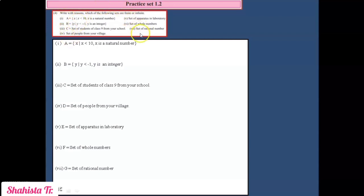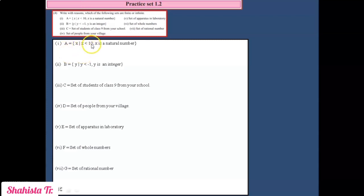Sub-question 1: A = {x such that x < 10, x ∈ N}. Natural numbers starting from 1 and less than 10 are: 1, 2, 3, 4, 5, 6, 7, 8, 9. All these numbers are countable and limited. So A is a finite set.